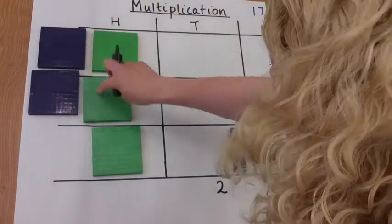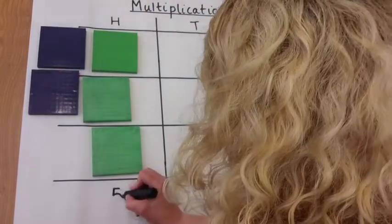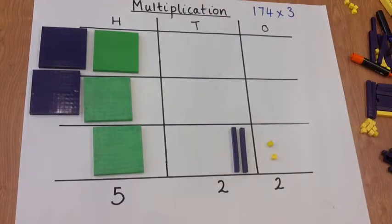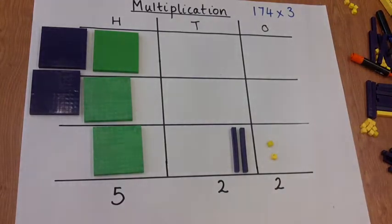And now we've got five hundreds. So 174 multiplied by 3 makes 522.